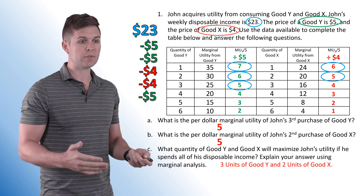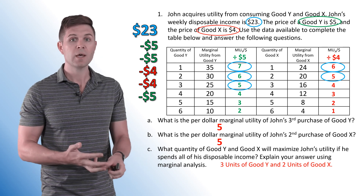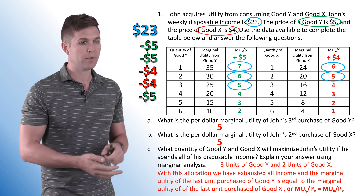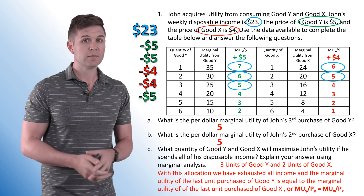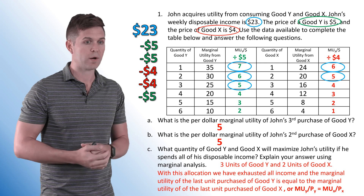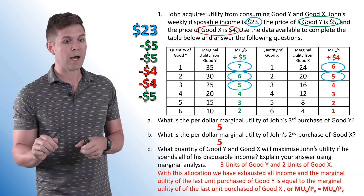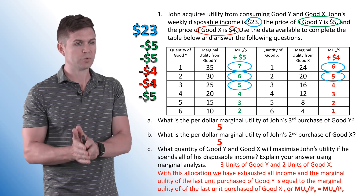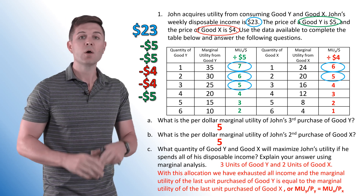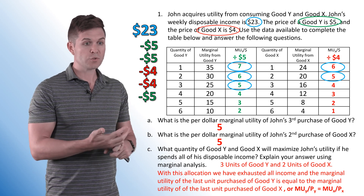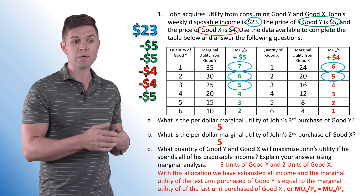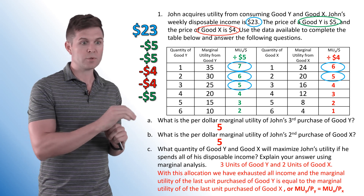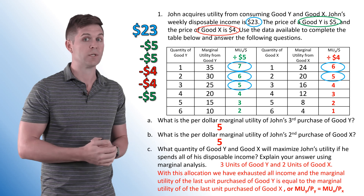The answer is 3 units of good Y and 2 units of good X. To explain it: with this allocation, we have exhausted all income, and the marginal utility of the last unit purchased of good Y is equal to the per dollar marginal utility of the last unit purchased of good X. Or simply state the equation: marginal utility of Y divided by the price of Y equals the marginal utility of X divided by the price of X.